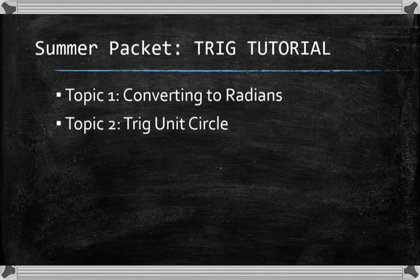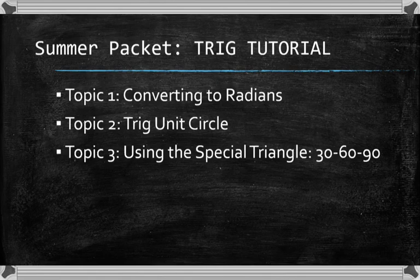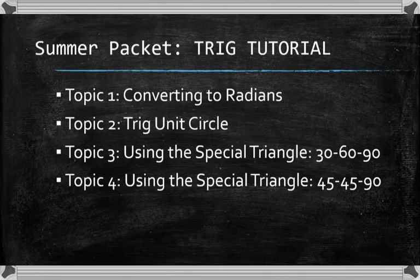We'll talk about converting to radians, the trig unit circle outline, using special triangles, first the 30-60-90 and next the 45-45-90.